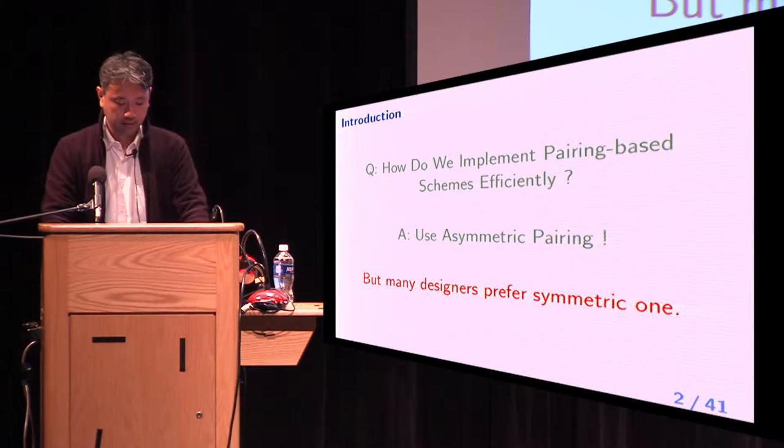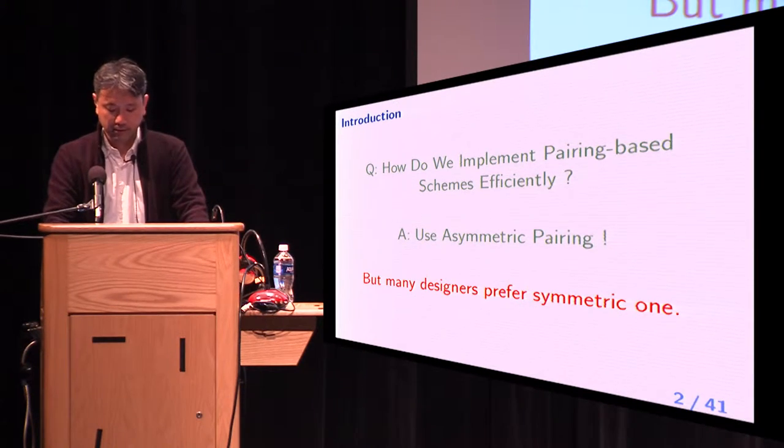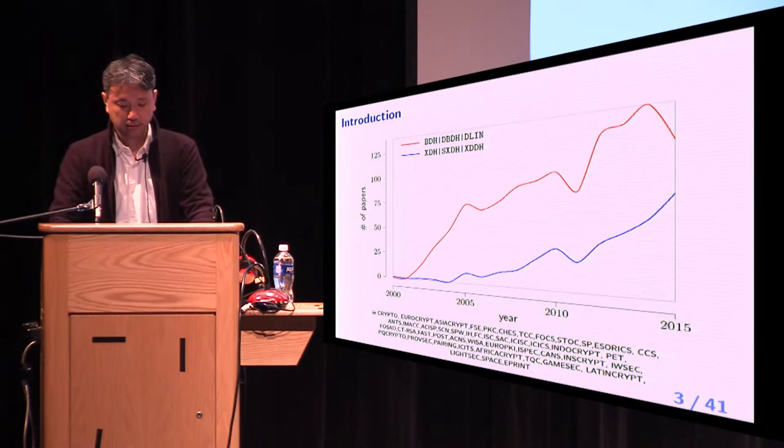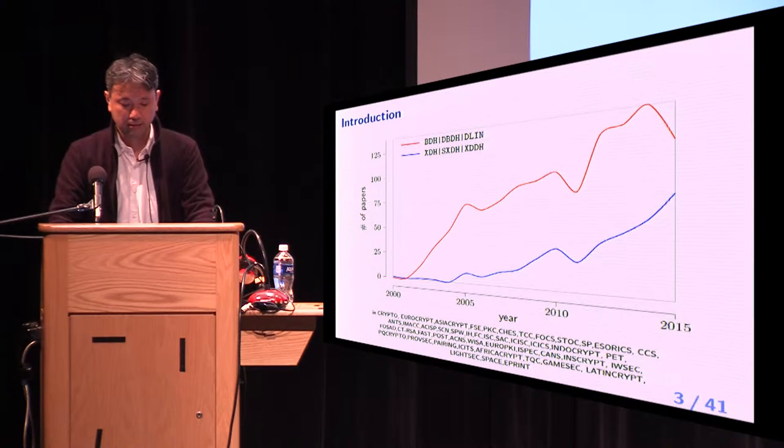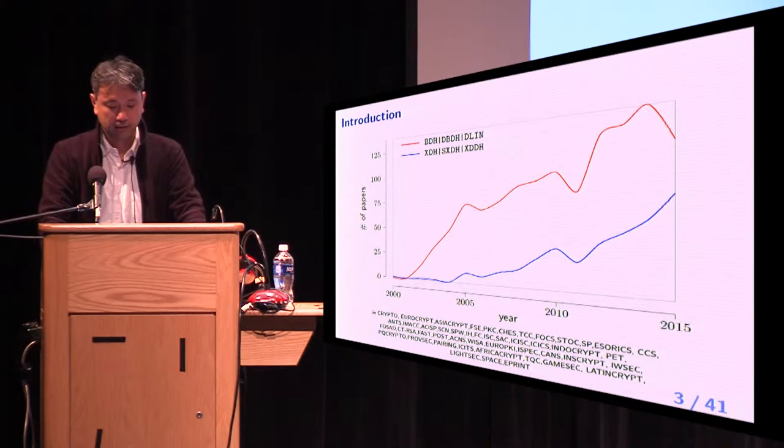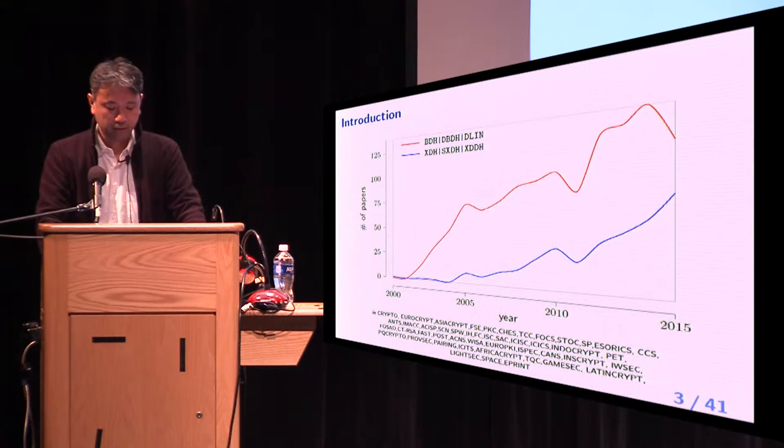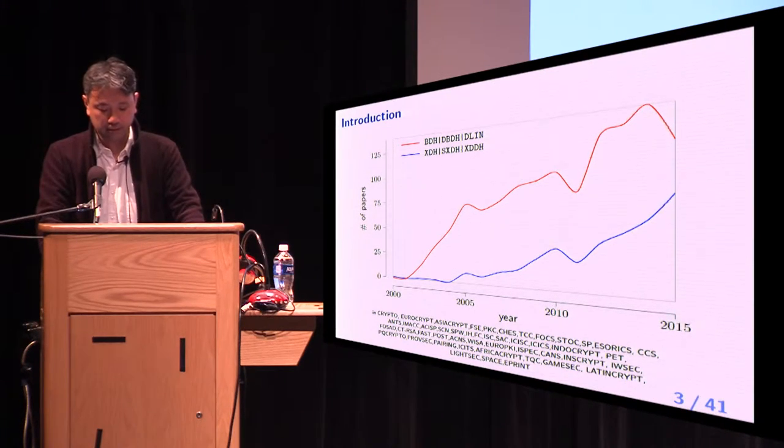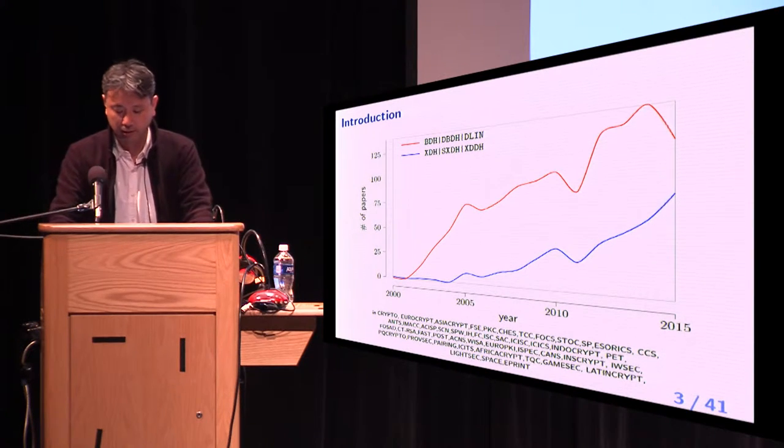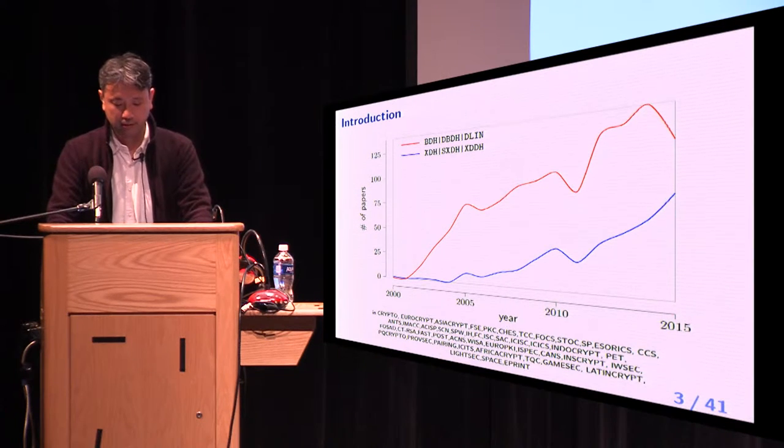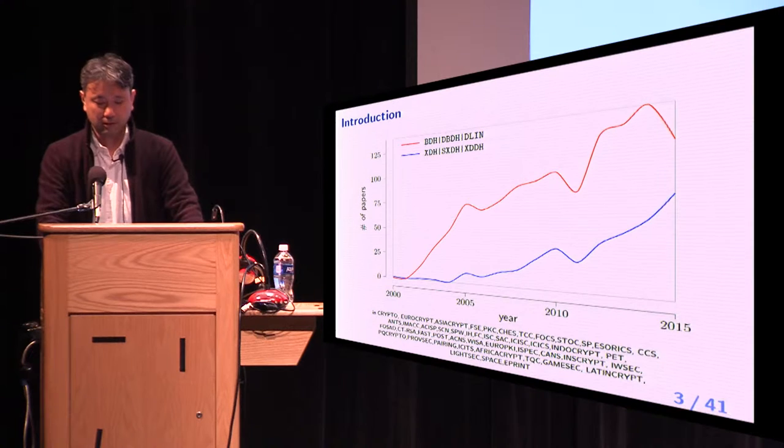But I think many crypto designers prefer symmetric one. This chart is number of papers per year which contains keyword. The red line keyword is BDH or DBDH or D-linear, which represents symmetric pairing. And the blue one is XDH or SXDH or XDDH, which represents asymmetric pairing. Asymmetric pairing becomes more and more popular in recent years, but symmetric one is still popular.